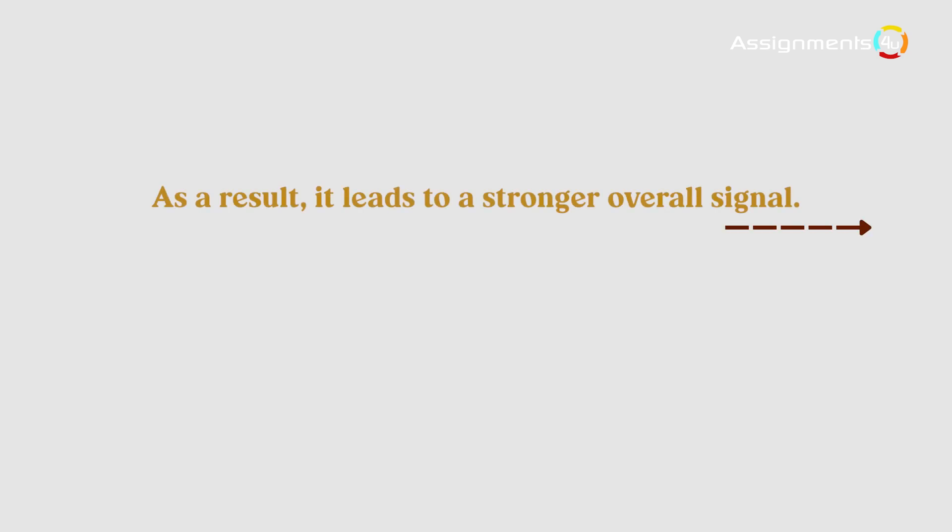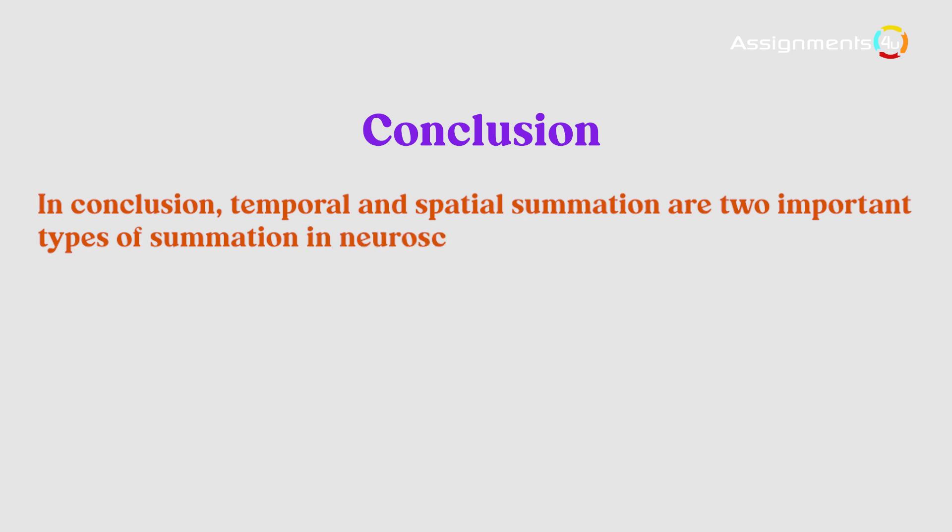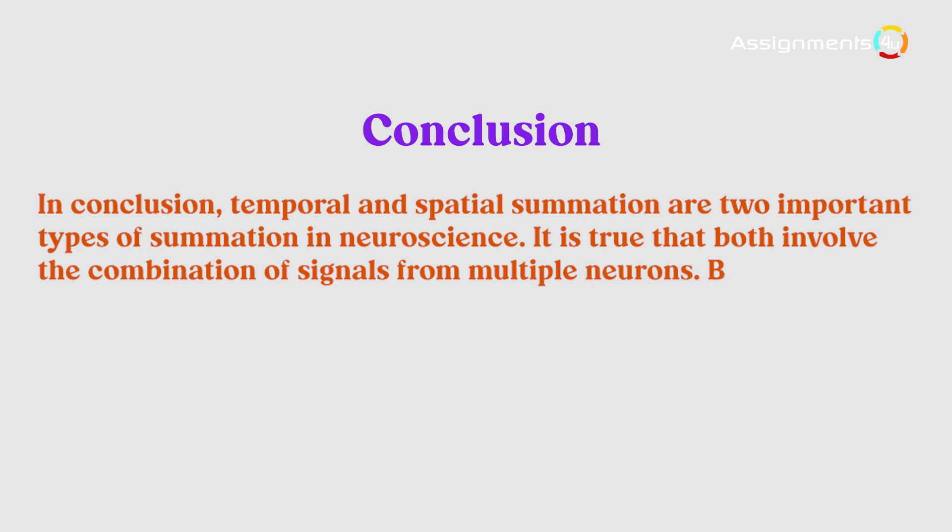In conclusion, temporal and spatial summation are two important types of summation in neuroscience. It is true that both involve the combination of signals from multiple neurons, but they differ with respect to how the signals are accumulated and the types of neurons involved.